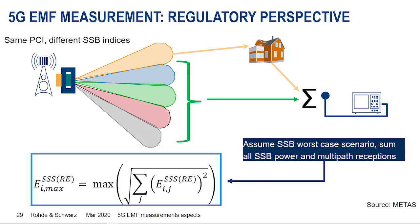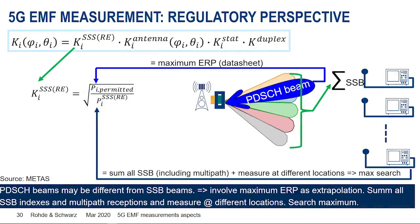The first requirement of this procedure is to measure all SSBs visible at one single measurement site — our test equipment needs to integrate all SSB indices simultaneously, integrate all SSB powers into one single value, and also do a peak search analysis to detect the strongest EMF. Second is the correlation factor accounting for beamforming behavior: the traffic channel beam may point in a different direction than the SSB beam, and may also have a different antenna gain.